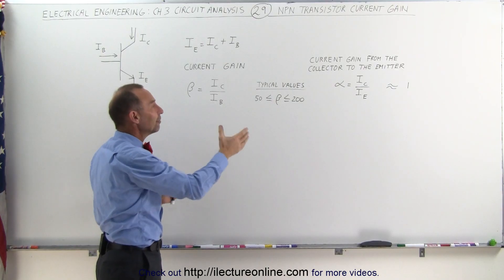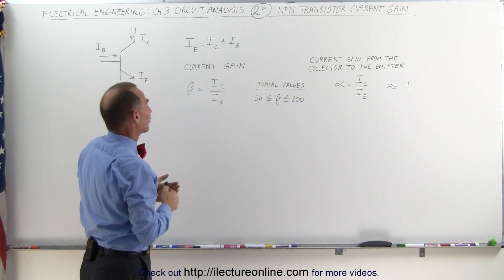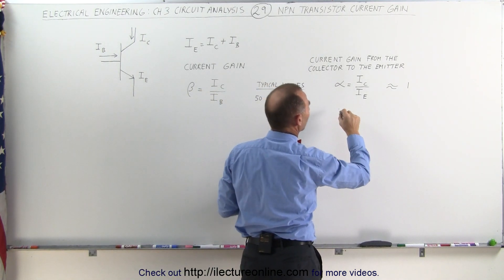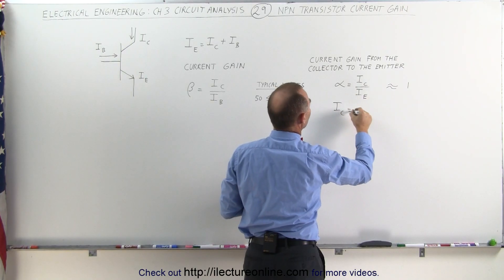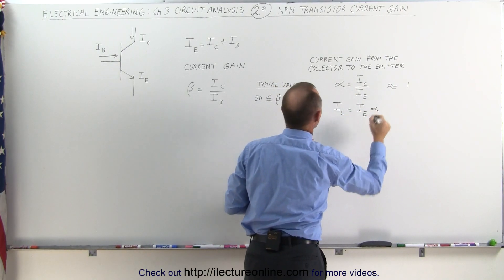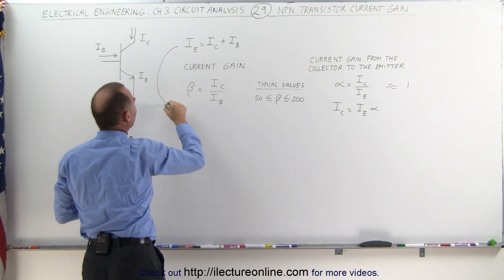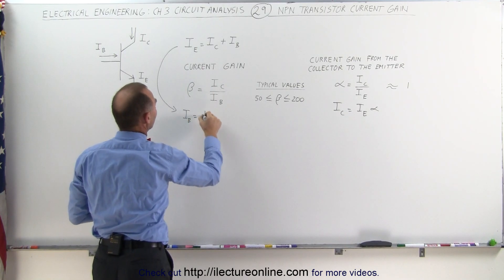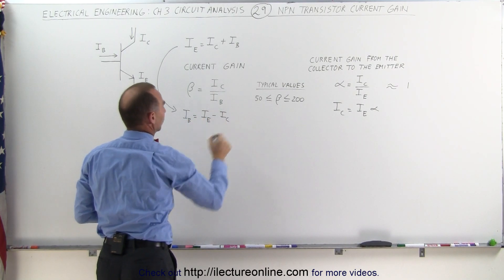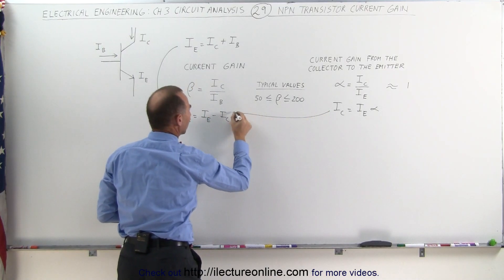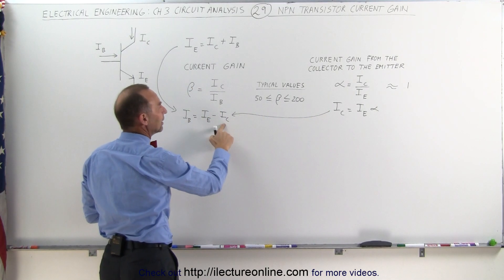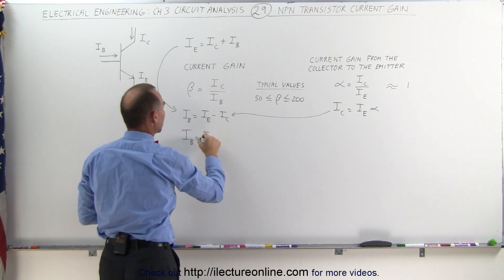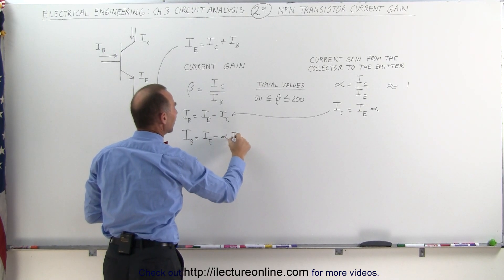We're going to compare beta and alpha — the two different kinds of current gains on a transistor. First, we're going to solve the equation for the collector current, so we can say that the collector current is equal to the emitter current times alpha. Then we take the equation I_B = I_E − I_C and solve for the base current. Substituting I_C = alpha × I_E, the base current equals the emitter current minus alpha times the emitter current.